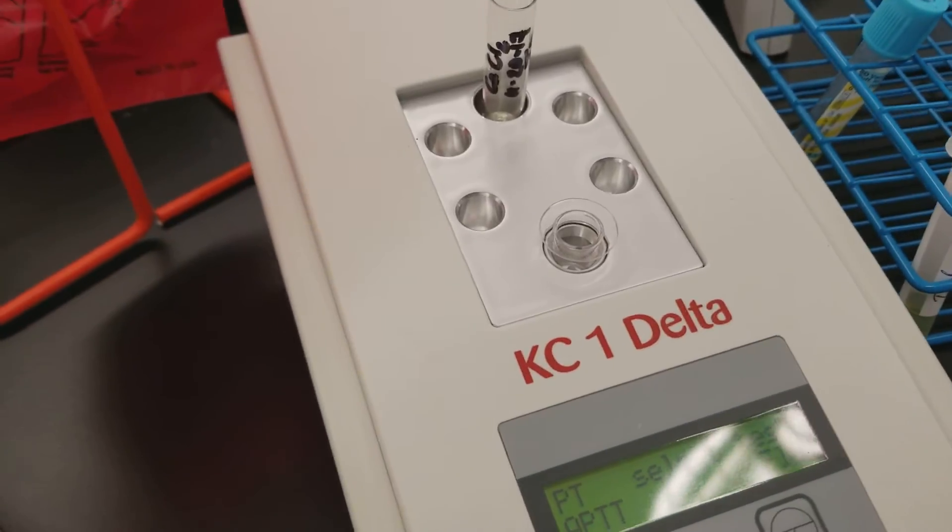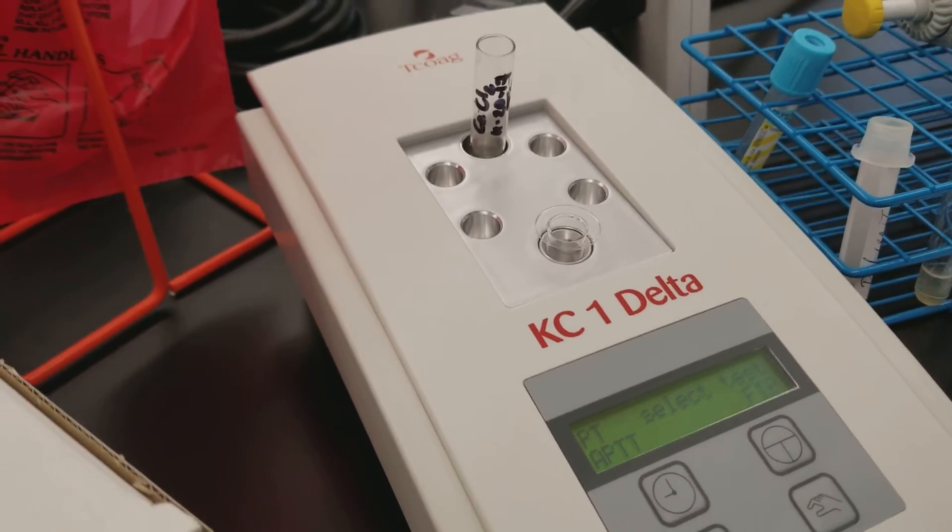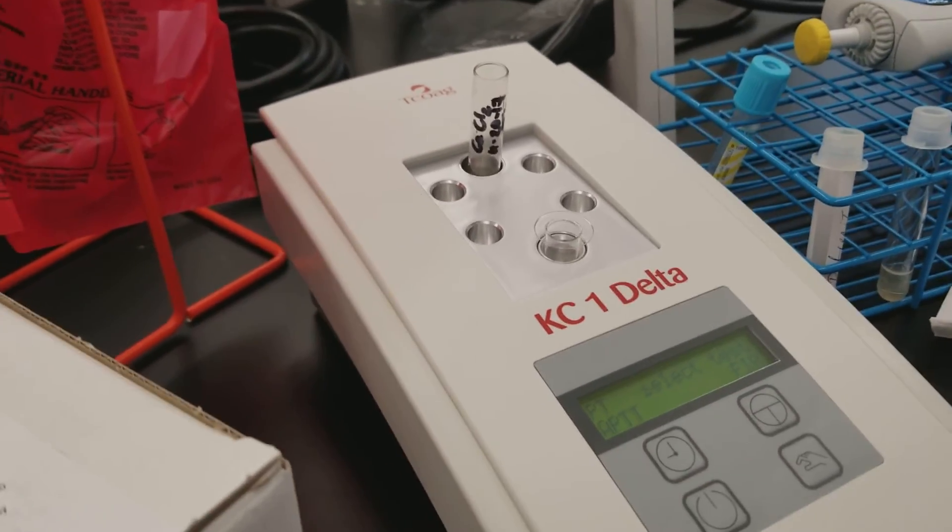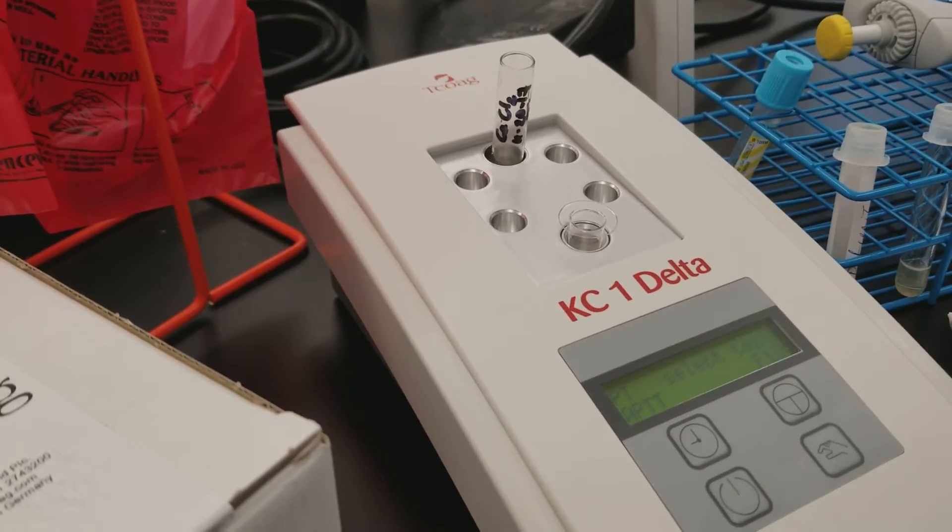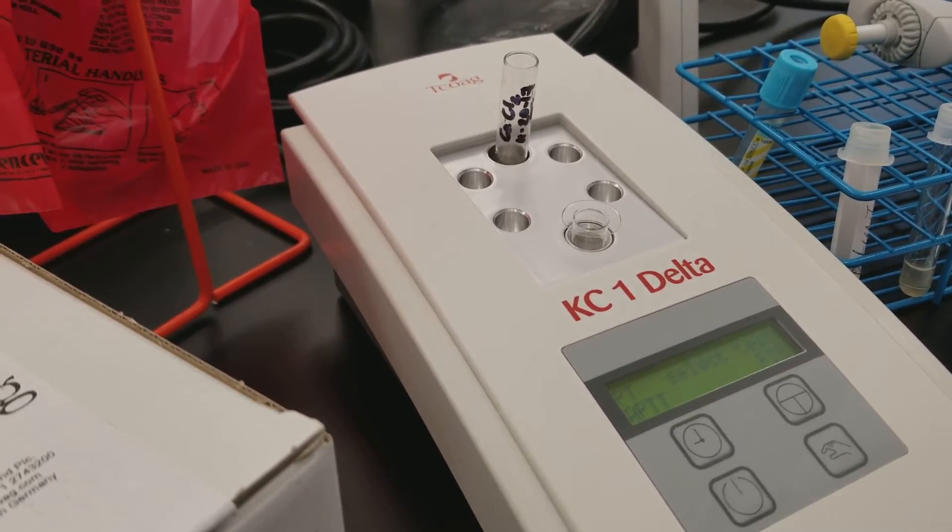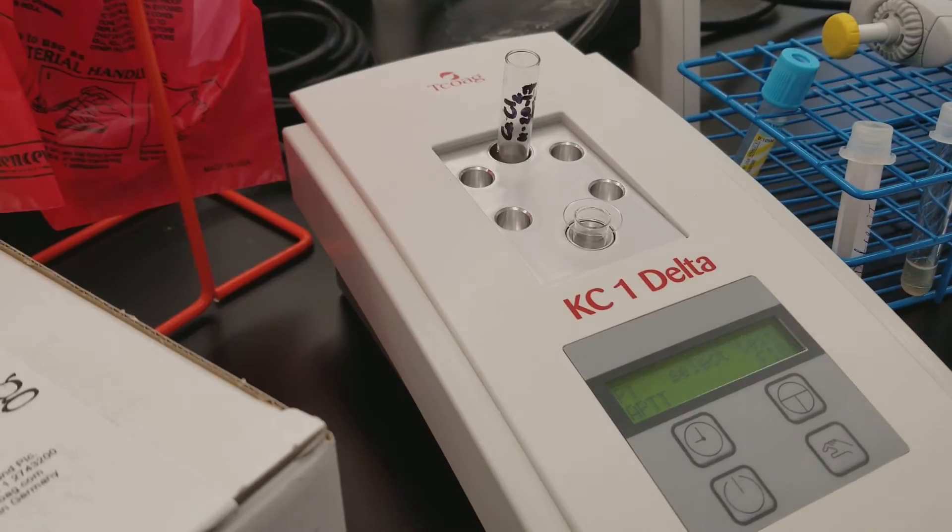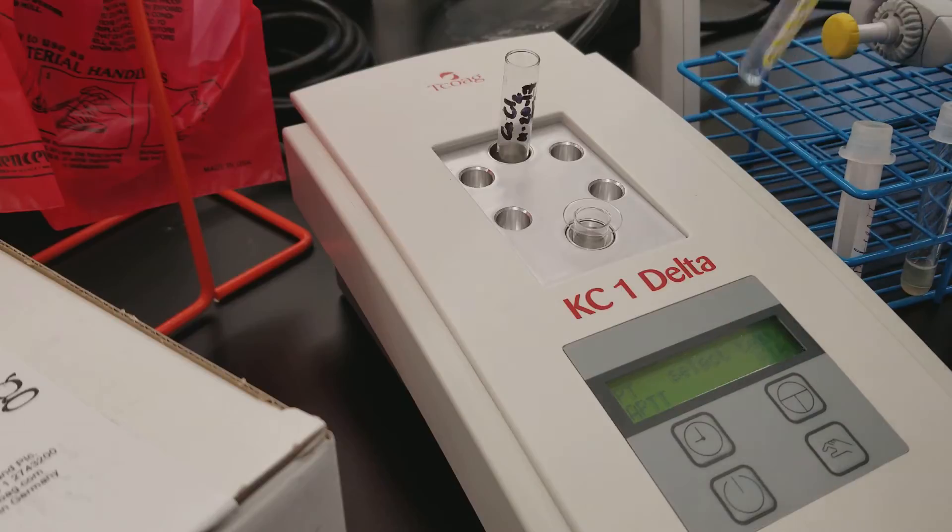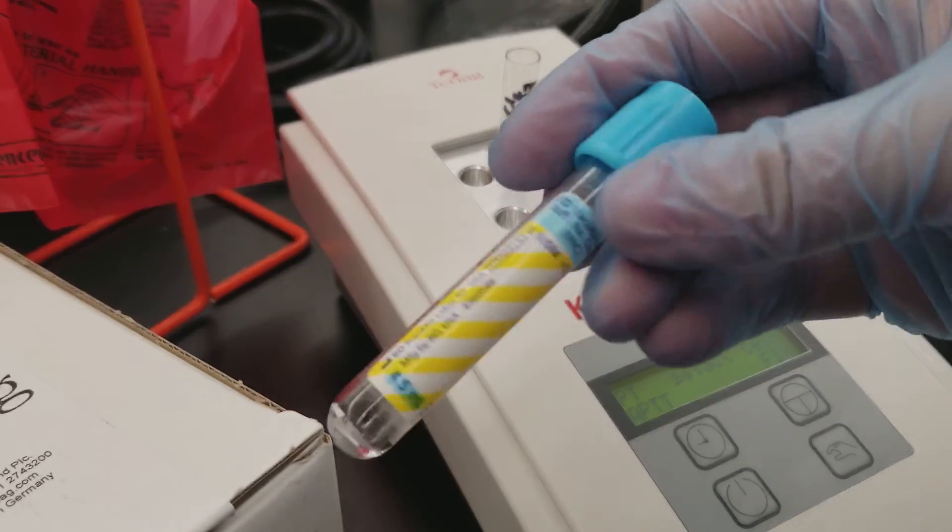So the two types of testing that I'm doing today are the PT, the prothrombin time, and the activated partial thromboplastin time, which is the PTT. So with that, we have two reagents that we use with the PTT, and it's due to how the specimen tube actually works.